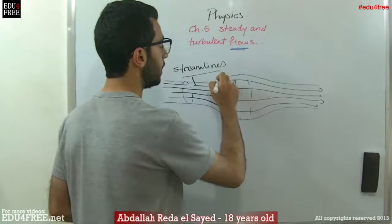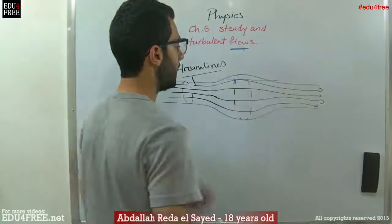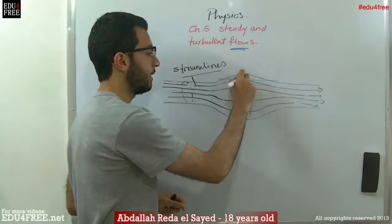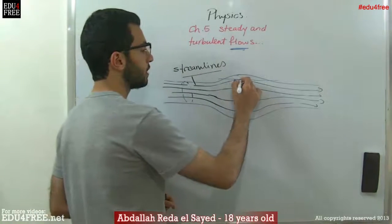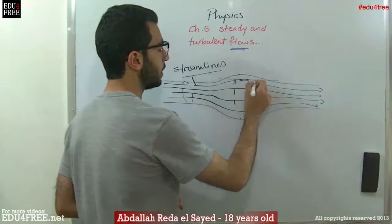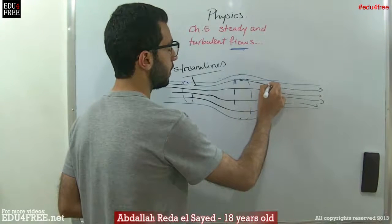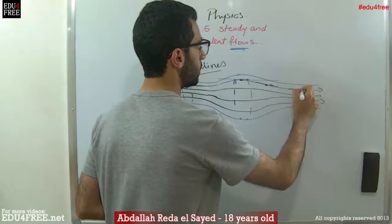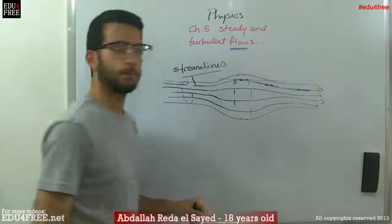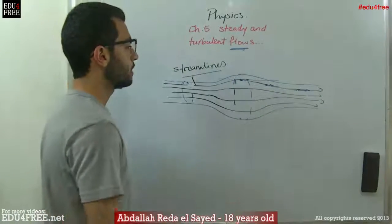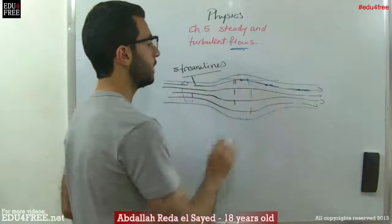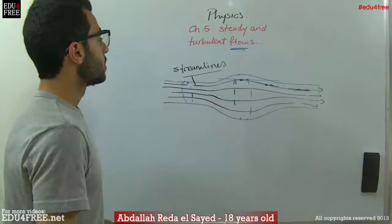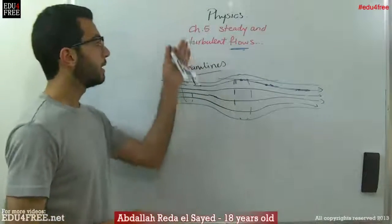The tangent to the streamline at any point determines the instantaneous velocity of the particle of the liquid at that point. For example, at one point the particle is moving in one direction; drawing a tangent at another point shows the particle moving in a different direction. So drawing a tangent shows us the instantaneous velocity direction of the liquid particle at that point. This is the form of the steady flow.